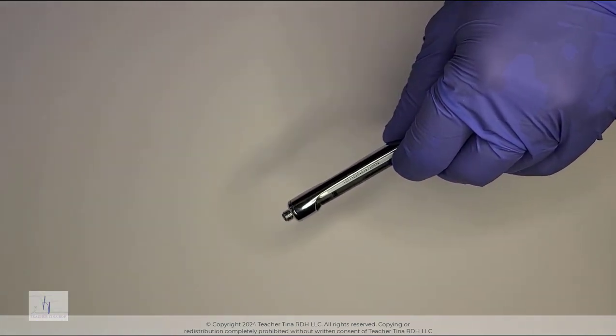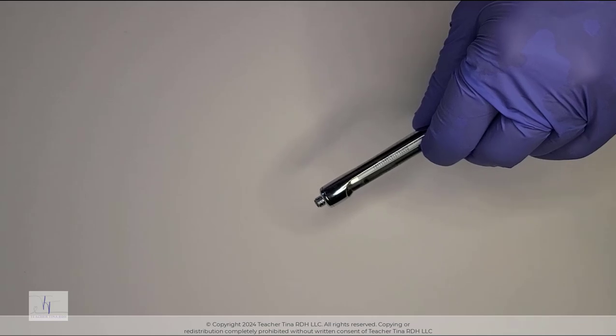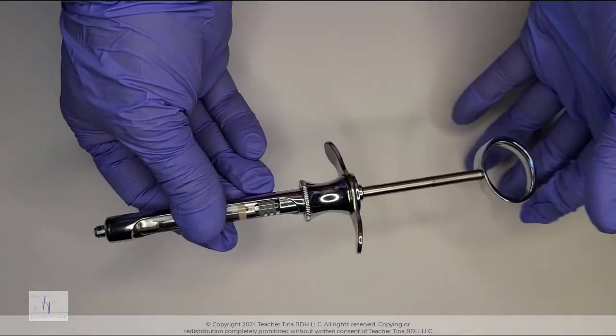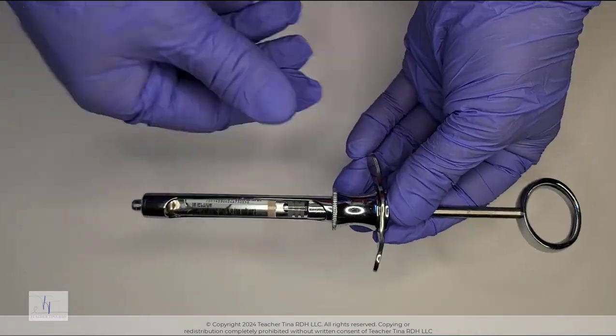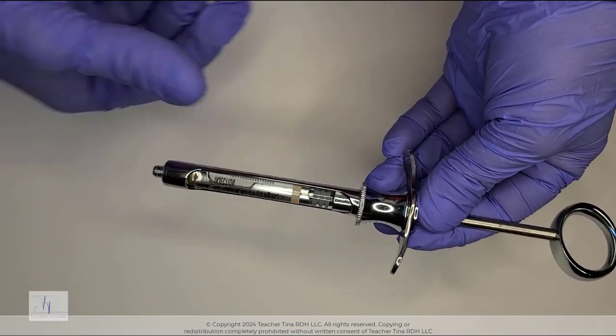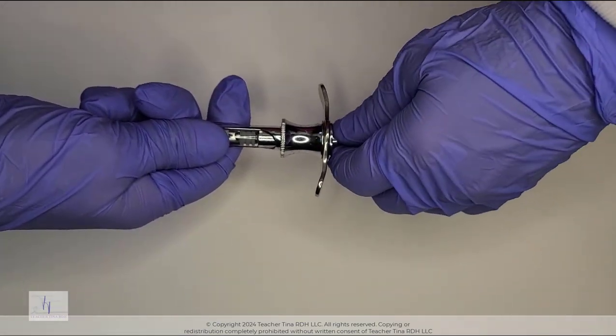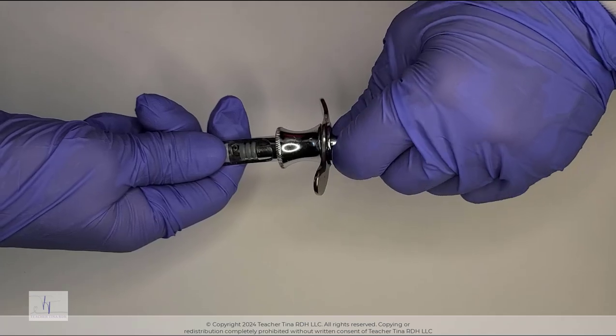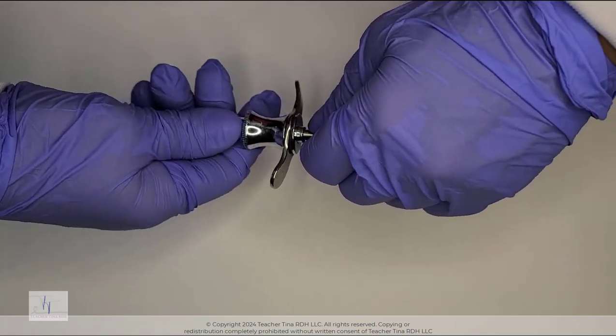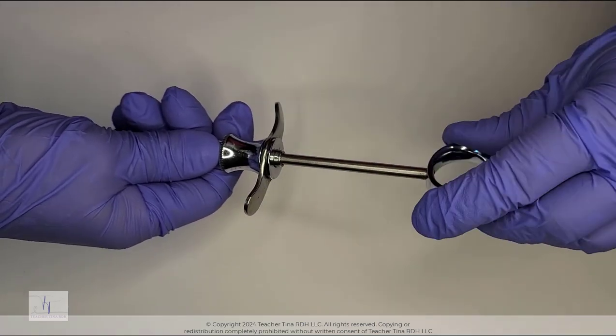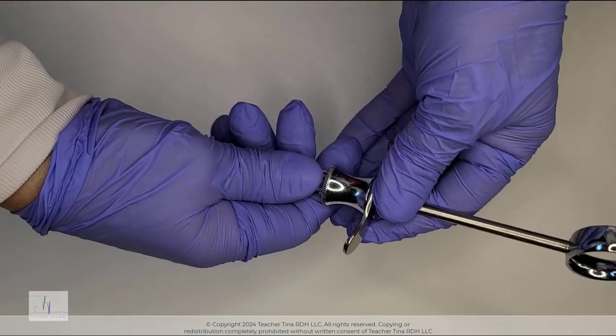When it's time to remove the cartridge, simply grasp the cartridge, holding it with your thumb generally near the large window, and pull back on the piston of the syringe and gently twist. Be careful not to twist the thumb ring off.